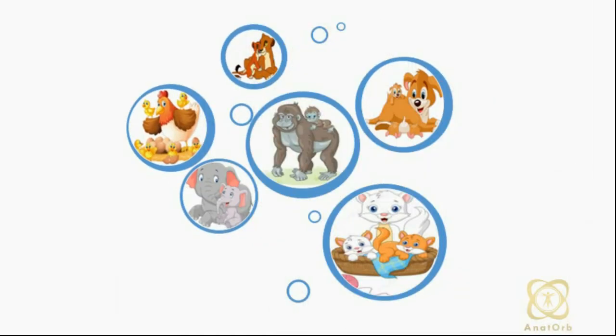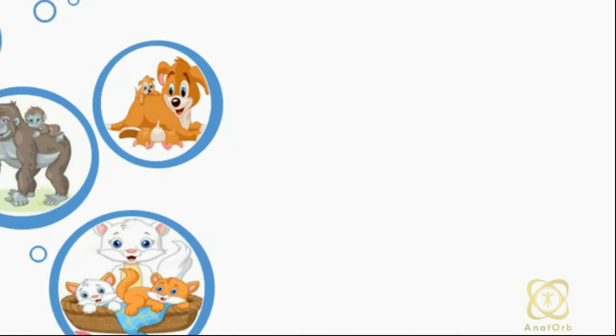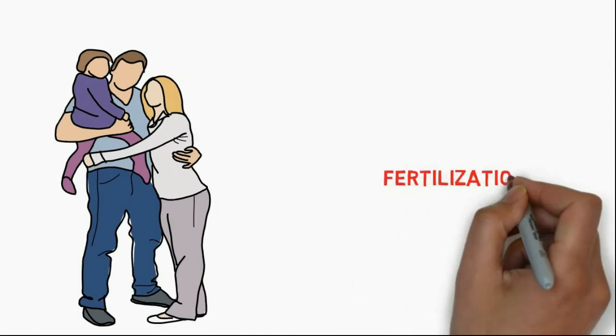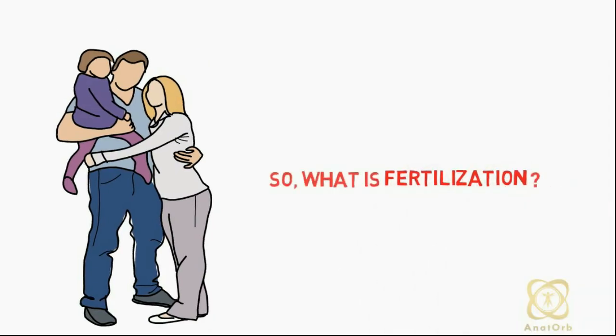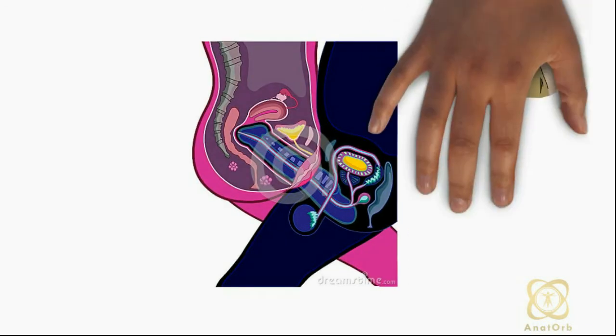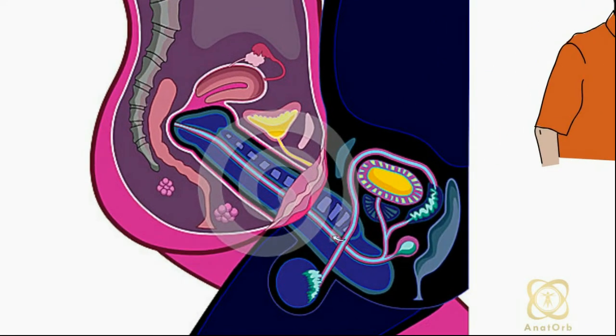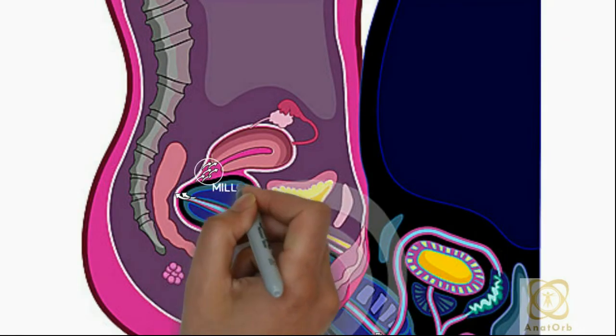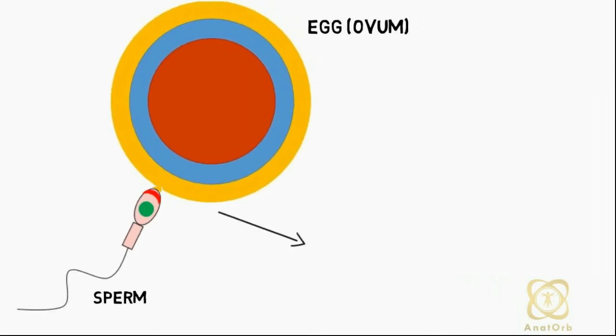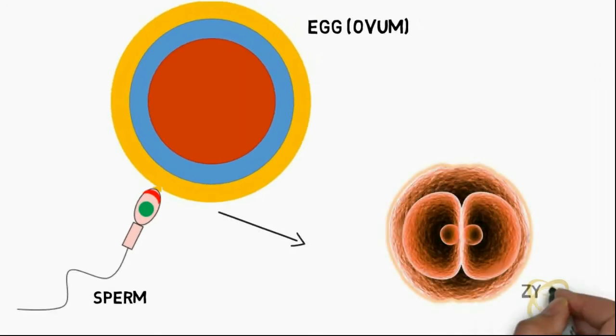For species to multiply, they have to procreate, and for humans to do so, fertilization has to occur. During sexual intercourse between a sexually active male and female, millions of sperm are released by the male into the vagina of the female. The process by which the egg released by the female fuses with the sperm released by the male to form a zygote is called fertilization.